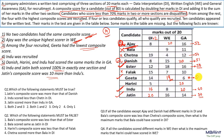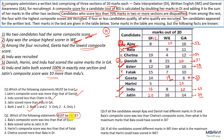Question 1 asks which statements must be true. First: Jatin's composite was more than Danish's — yes, 70 versus 51, definitely true. Second: Indoo scored less than Chetan in DI — true. Third: Jatin scored more than Indoo in GA — no, that's wrong since both have x=20. So both statements one and two are correct.